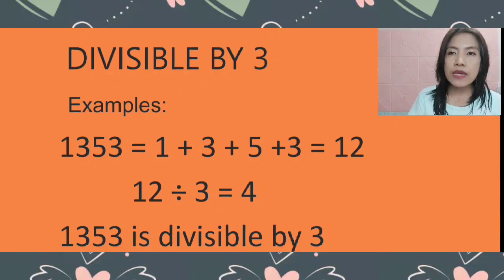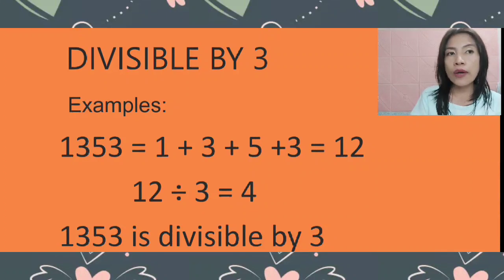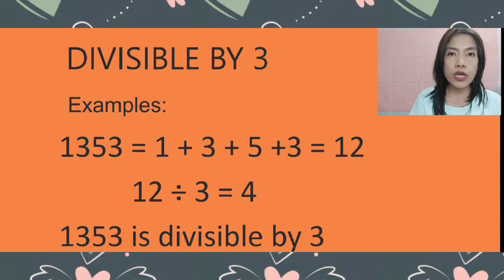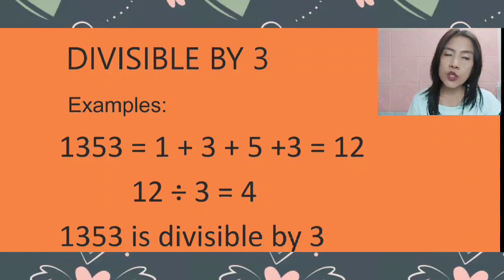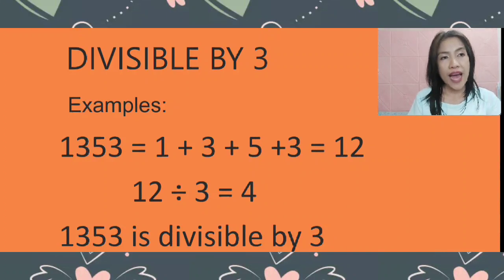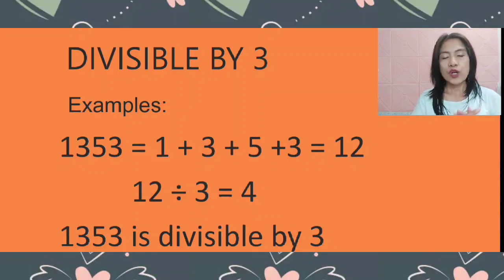Let's add them: 1 plus 3 plus 5 plus 3 gives us 12. When we divide 12 by 3, it gives us 4. Therefore, 1,353 is divisible by 3. I hope it's clear.